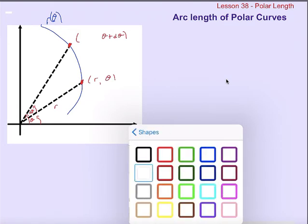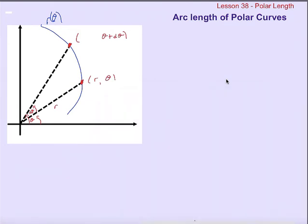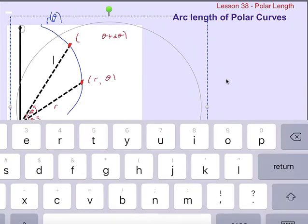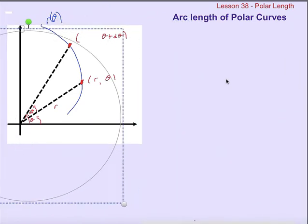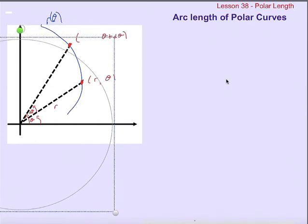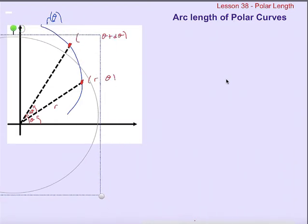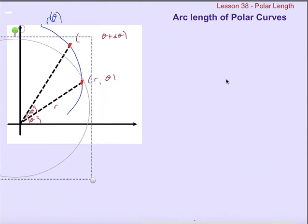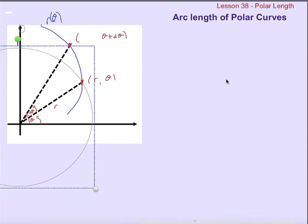The circle that passes through the origin and through the point (r,θ)—which means that to this point right here, this length is also r.